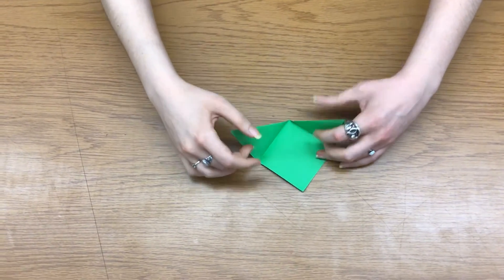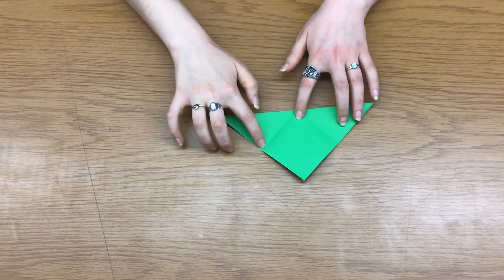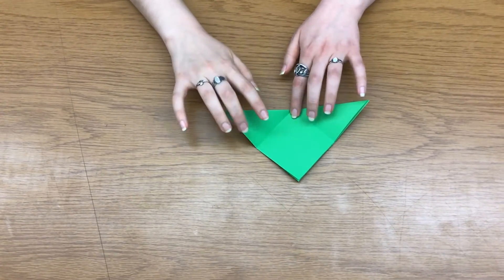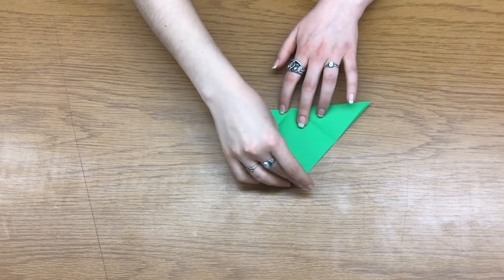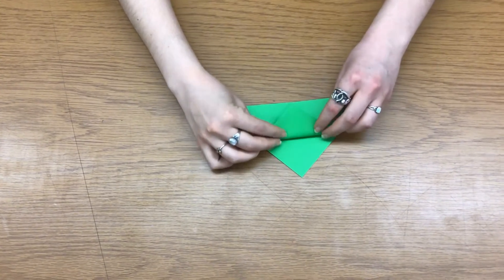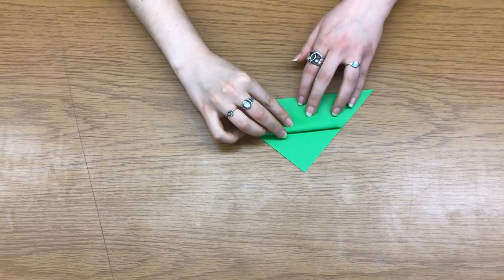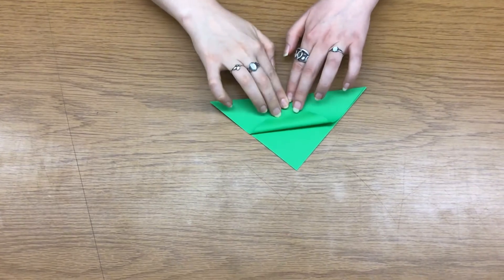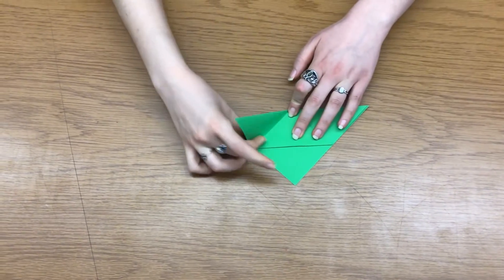All right, then we're going to unfold these so we can see where the creases are and then fold this down so that it touches a flat line and matches up with those folds.